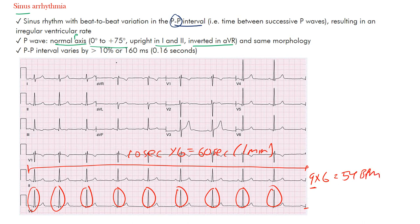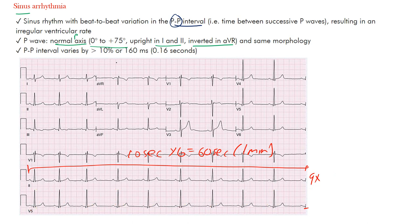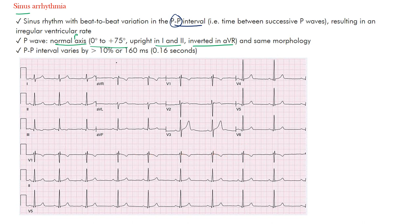That's about 54 beats per minute — a bradycardic rate in an adult, so this would be sinus bradycardia. But there's also this sinus arrhythmia component. The key criterion is that the P-to-P interval varies by at least 10% or 160 milliseconds between successive beats.